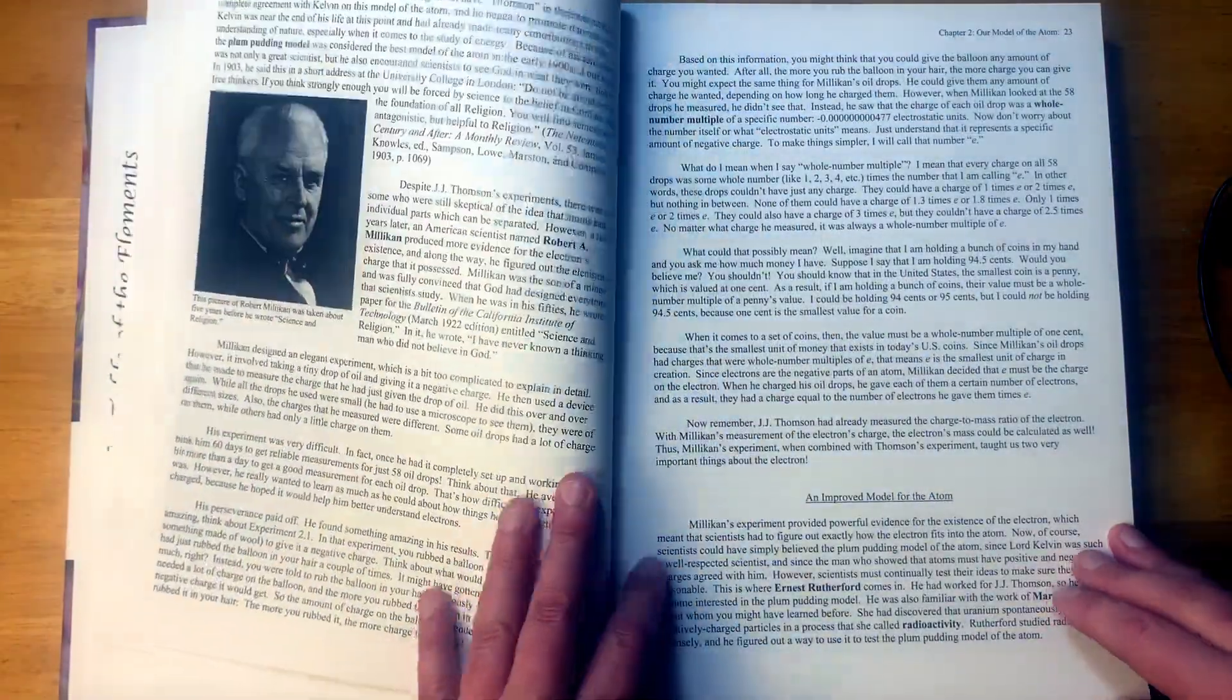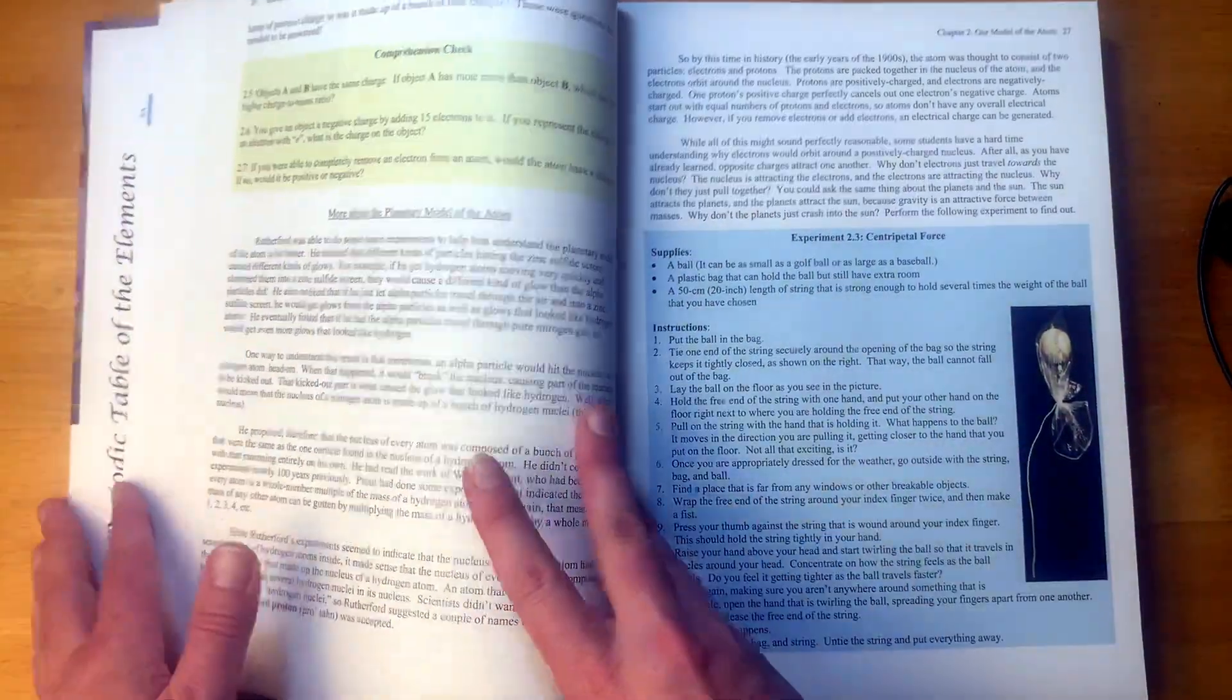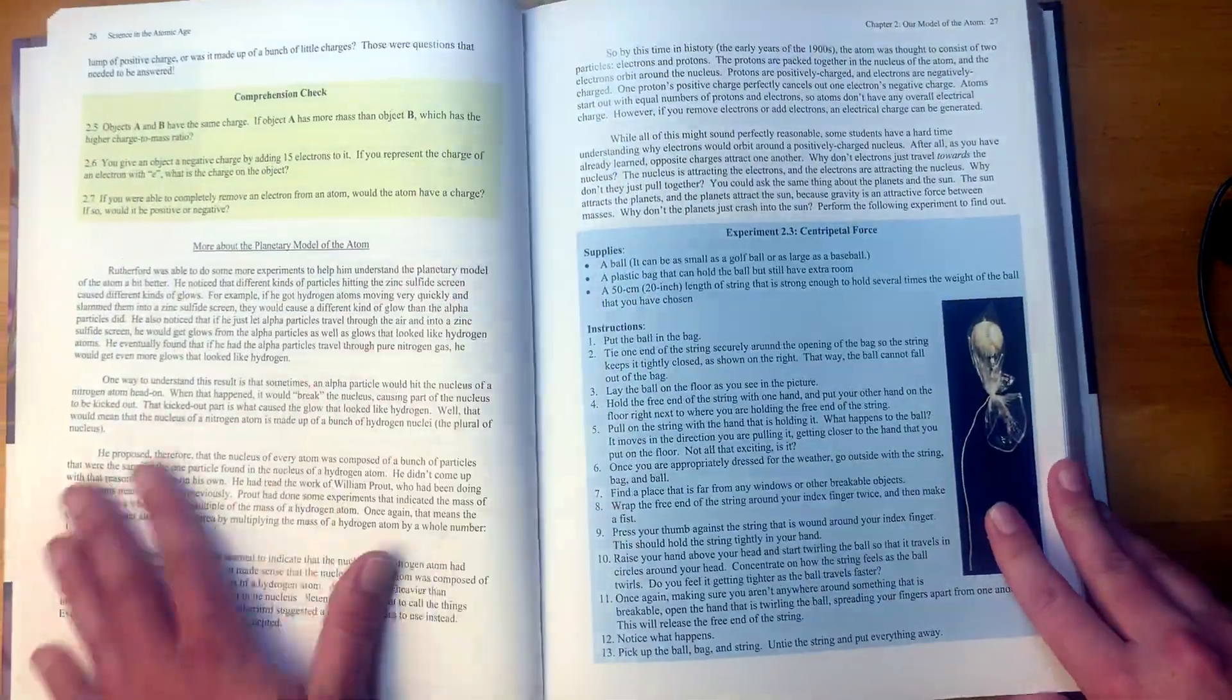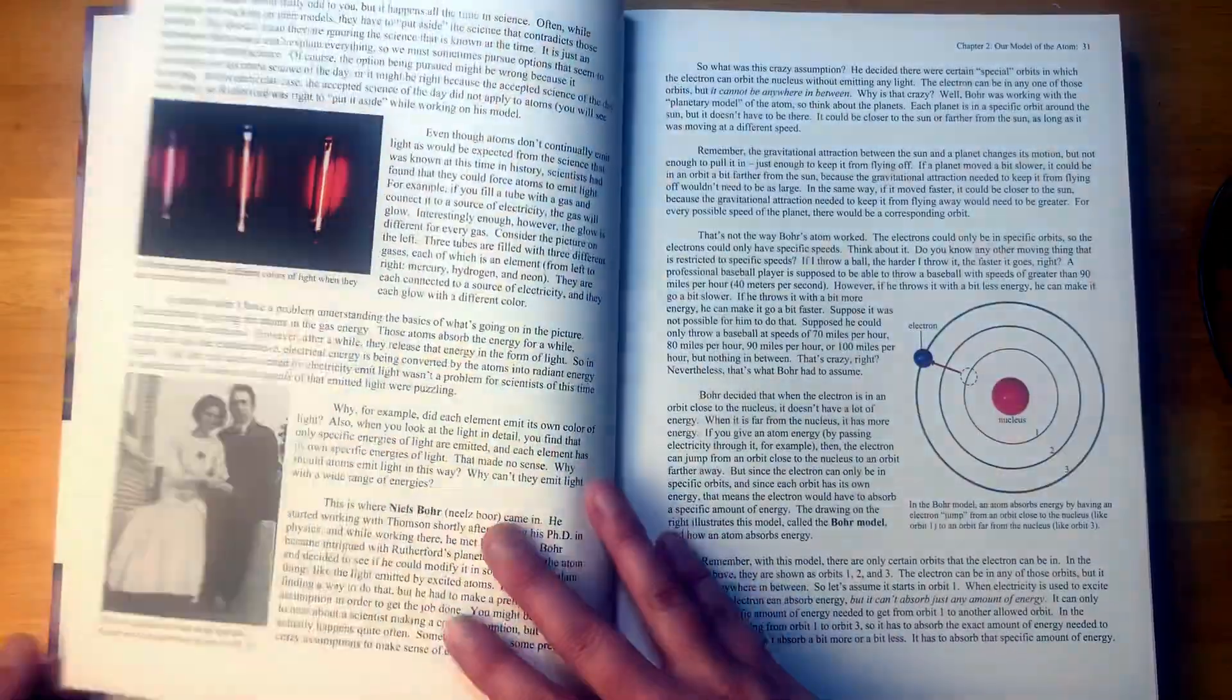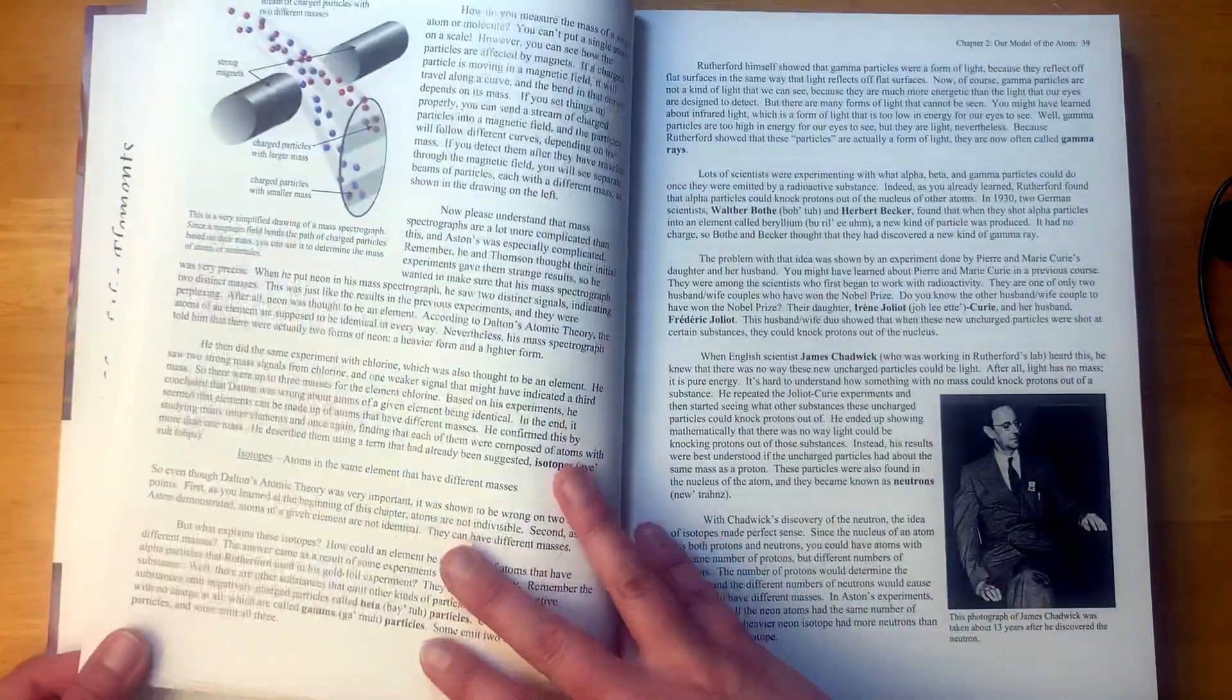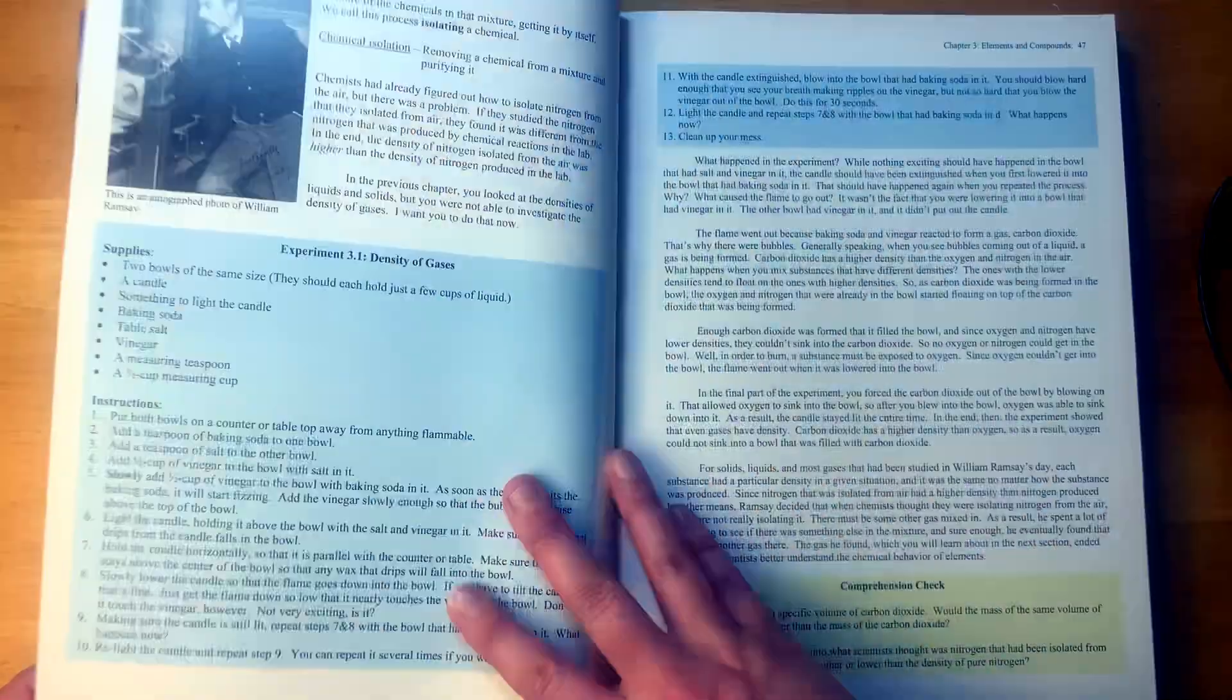So I'm just going to flip through some pages here so you can take a look. The chapters. I don't know, that first chapter I guess was supposed to be a little shorter. So how many chapters were there? Let's see. There were 16 chapters. So I guess each chapter would take maybe about two weeks and give you a little extra time at the end of the school year.